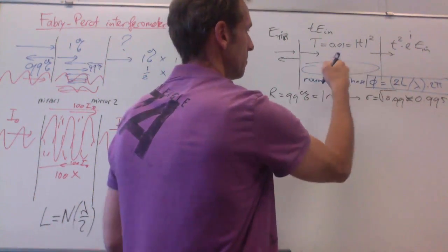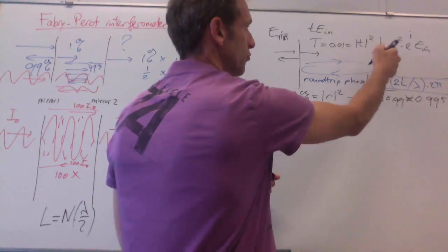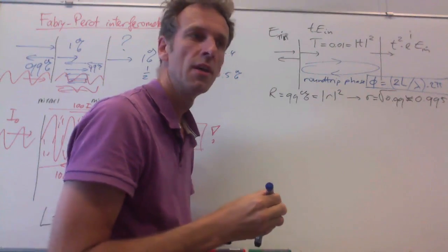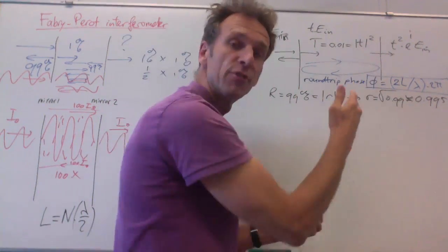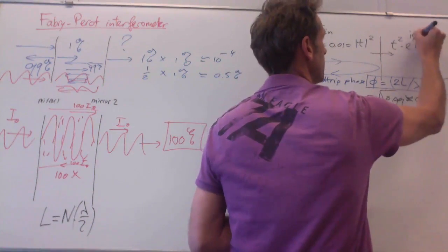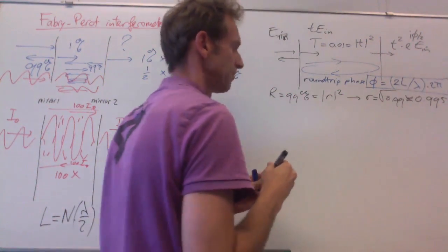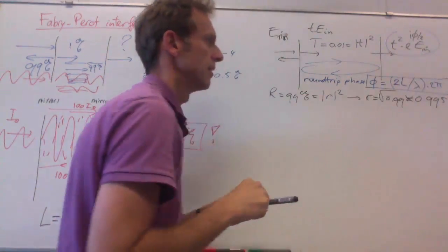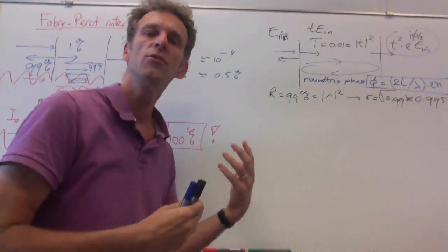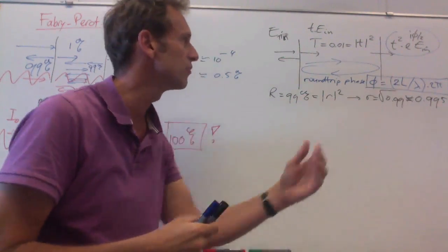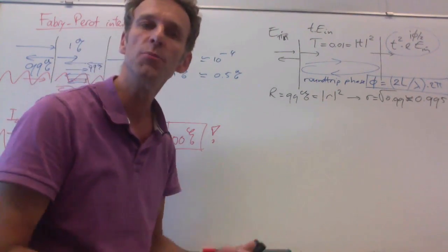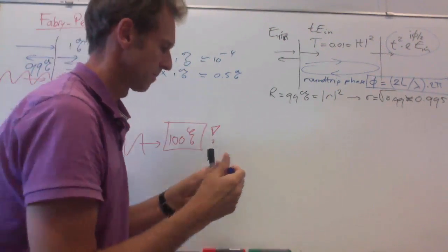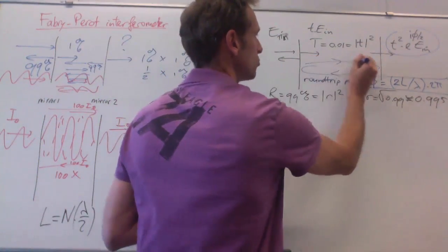And then, looking back at this first transmission, that's only half a round-trip, so that phase that you acquire is φ over 2. And this is the first trial of the light to get out of the system, out of the Fabry-Perot, but the light gets more trials because you have round-trips.